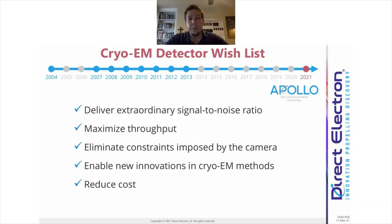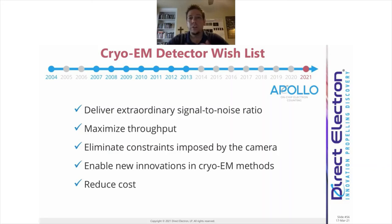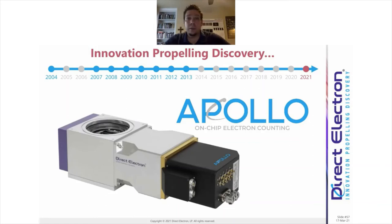Apollo really checks all the boxes for what we want from a direct detector. It delivers extraordinary signal-to-noise ratio through on-chip CDS and on-chip thresholding. It maximizes throughput by enabling a relatively bright beam for very fast image acquisition. It eliminates constraints imposed by the camera, which not only optimizes experiments but also enables new innovations in cryo-EM methods. And it achieves all of this while reducing overall system cost. We're really excited about Apollo and can't wait to see what it does in the field.